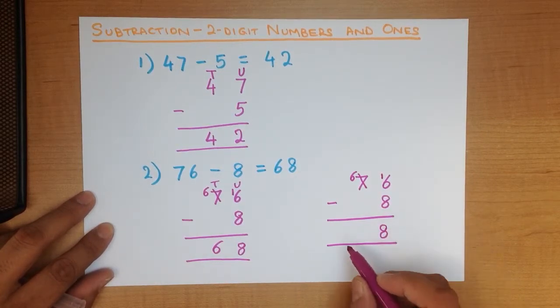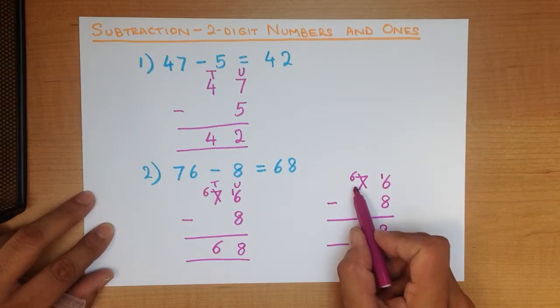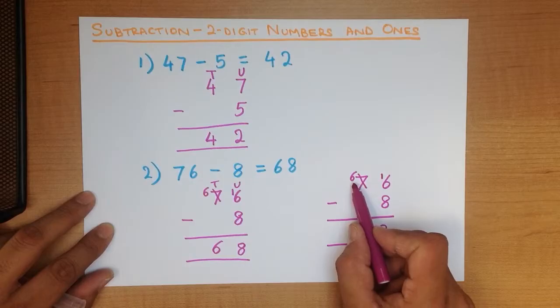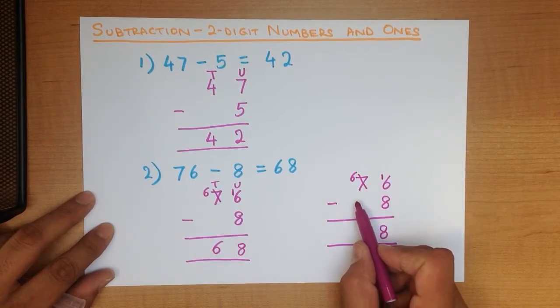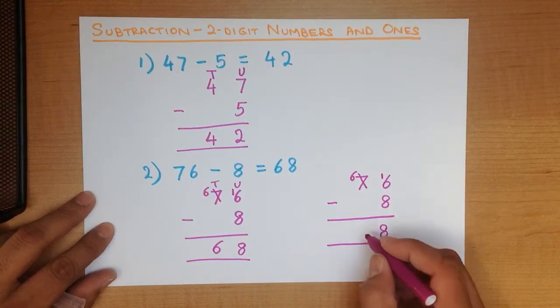The answer is 8. And in this case, in the tens column, it is 6. 6, not 7. The 7 has become 6. 6 minus 0 is 6.